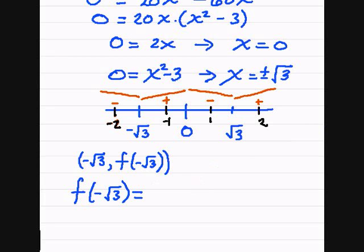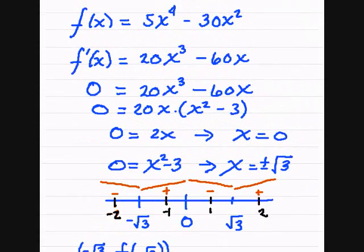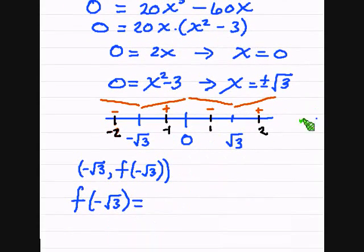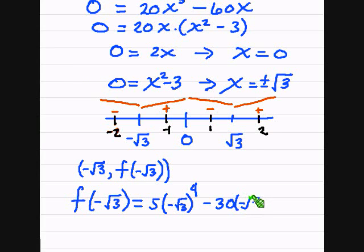So we have 5 parenthesis negative square root of 3, right? And it's all raised to the 4th power minus 30 times negative square root of 3. And that's all squared. Now you're taking this negative and raising it to the 4th power, so that negative is just going to disappear.